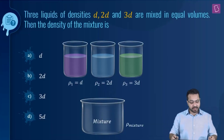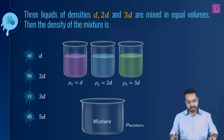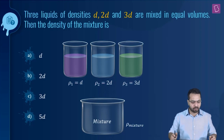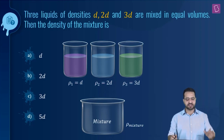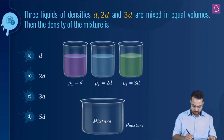The question is: three liquids of densities D, 2D, and 3D are mixed in equal volumes. Then the density of the mixture is?